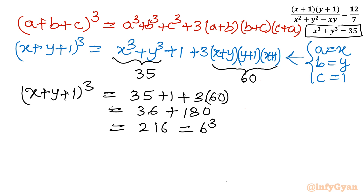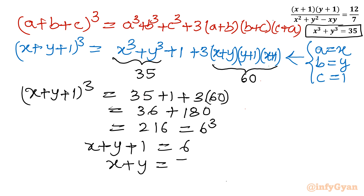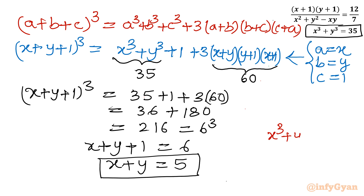Since the left-hand side is (x+y+1)³ and the right-hand side is 6³, and the exponents are the same, the bases must be equal. So x+y+1 = 6, giving us x+y = 5.